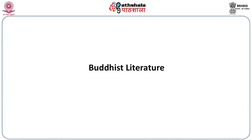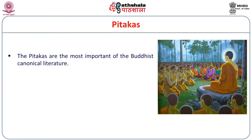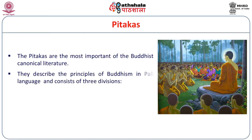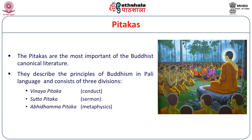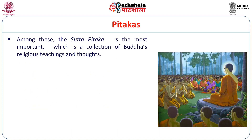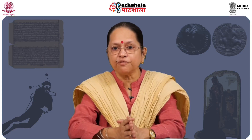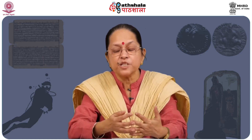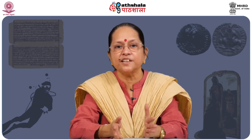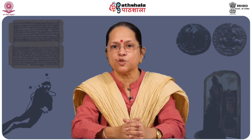We come to a very important source of ancient Indian history: Buddhist literature. The Pitakas are the most important of the Buddhist canonical literature. They describe the principles of Buddhism in Pali language and consist of three divisions: Vinaya Pitaka, Sutta Pitaka and Abhidhamma Pitaka — meaning conduct, sermon and metaphysics. Among these, the Sutta Pitaka is the most important, a collection of Buddha's religious teachings divided into five Nikayas: Digha meaning long, Majjhima meaning medium, Samyutta meaning connected, Anguttara meaning graduated and Khuddaka meaning small, which also includes the Jatakas. The Jatakas are a very important source of history as they contain previous birth stories of the Buddha along with various other historical aspects.